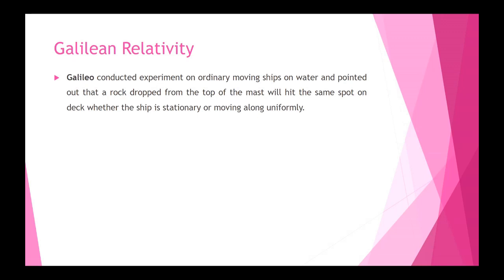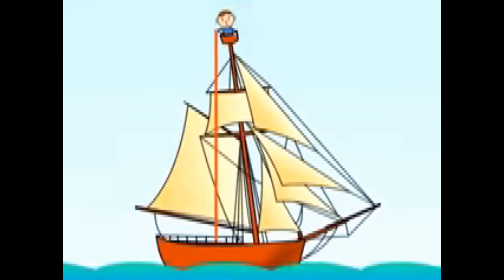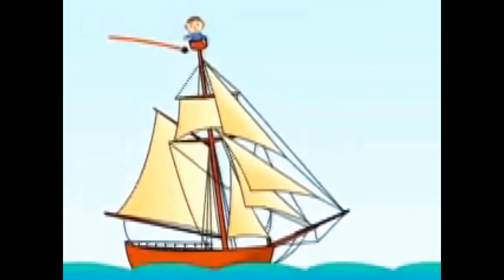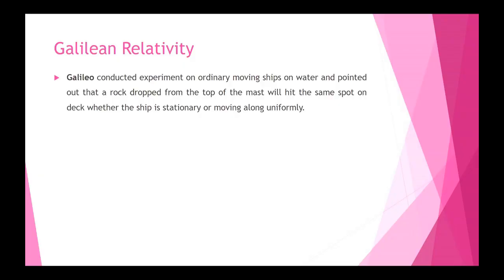Galilean relativity starts with Galileo's experiments — both thought experiments and practical ones — conducted on ordinary moving ships on water. He pointed out that a rock dropped from the top of the mast will hit the same spot on the deck whether the ship is stationary or moving with uniform velocity. In the animation, from the reference frame of an observer on the ship, the rock travels in a straight line, but from the reference frame of an observer at rest on the ground, the path is parabolic.